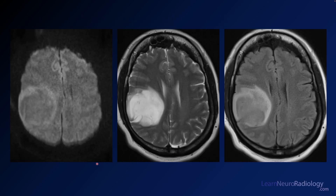Here you see the images from this case. On diffusion, there's maybe a faint rim where it's bright, but bright diffusion is not a dominant feature here. It's very bright on T2 with a relatively well-delineated margin. Then on FLAIR, you again see well-delineated margins, but the central portion of the tumor is more suppressed on FLAIR compared to T2.